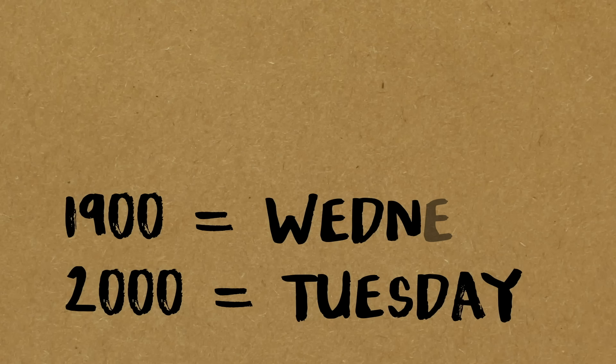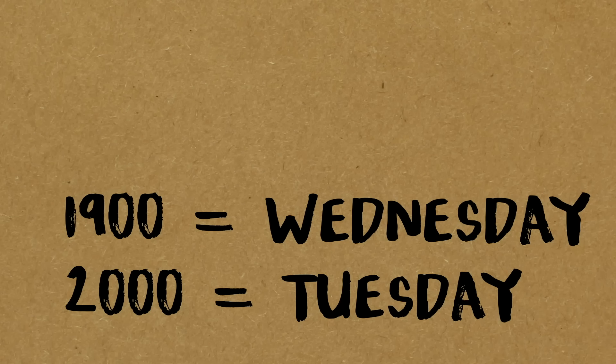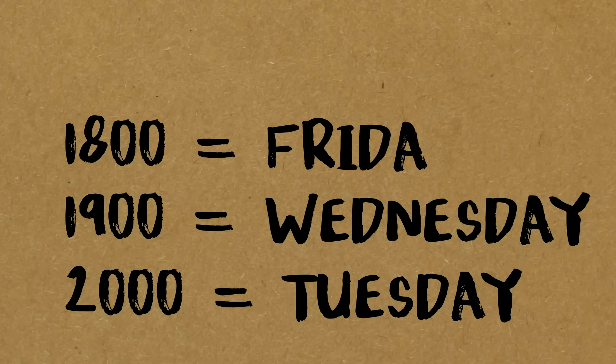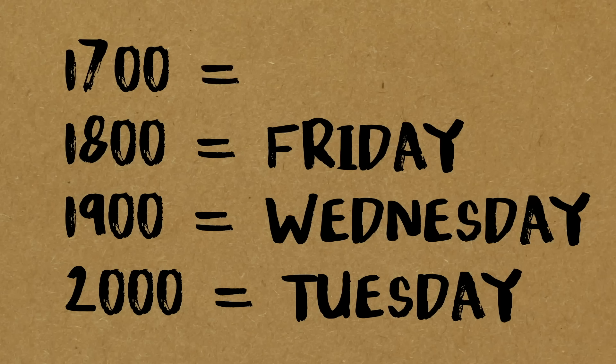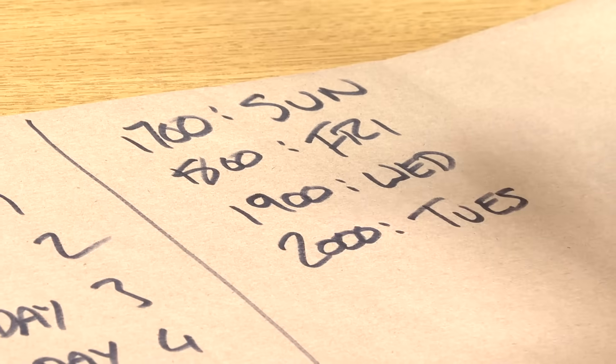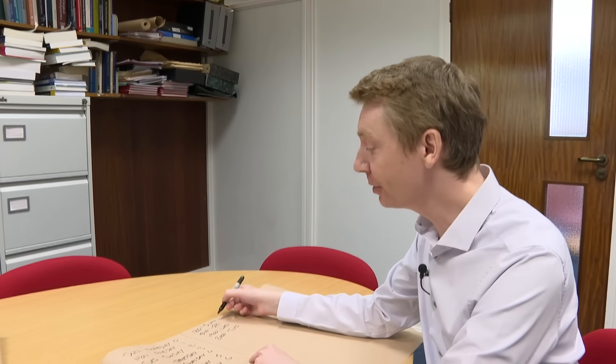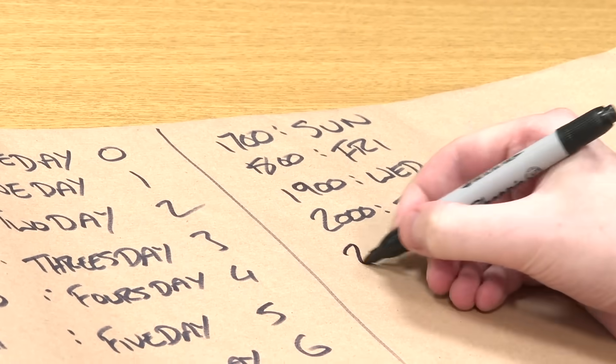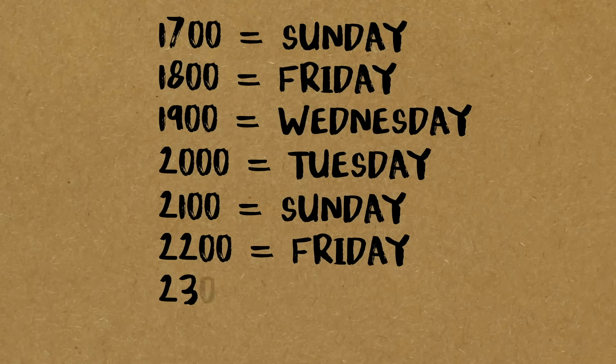If you really want to show off, you can do any century as well. Doomsday in 2000 was a Tuesday. In 1900 it was a Wednesday. In 1800 it was a Friday. And in 1700 it was a Sunday. So you can do any century — just start from those positions. And for the future, that pattern repeats: the 2100s start with a Sunday, then Friday, Wednesday, Tuesday, and so on.